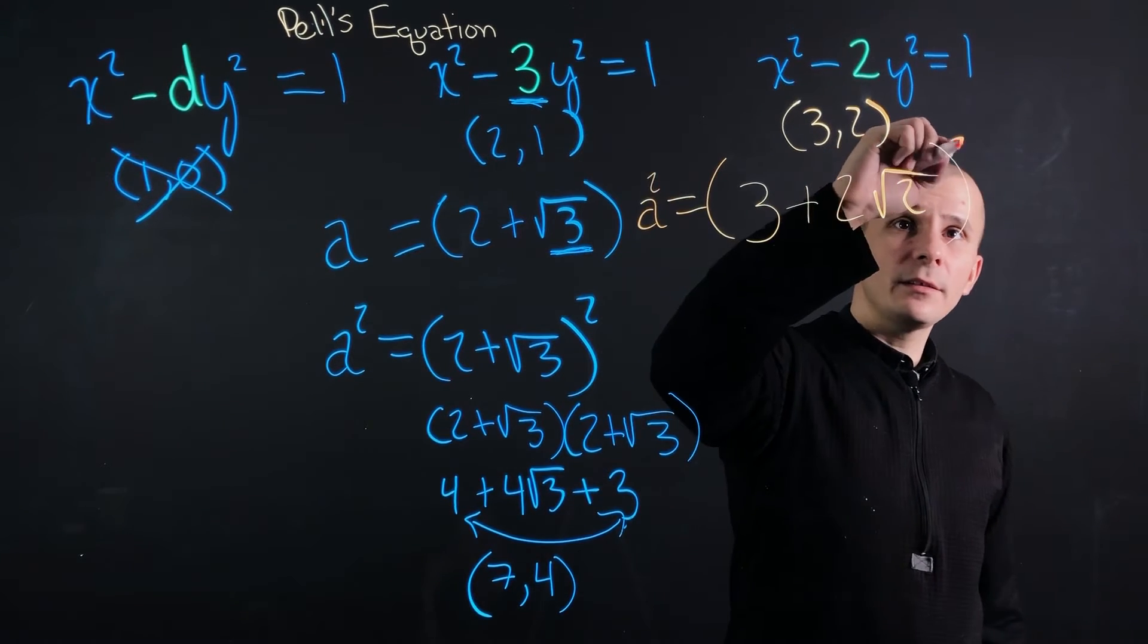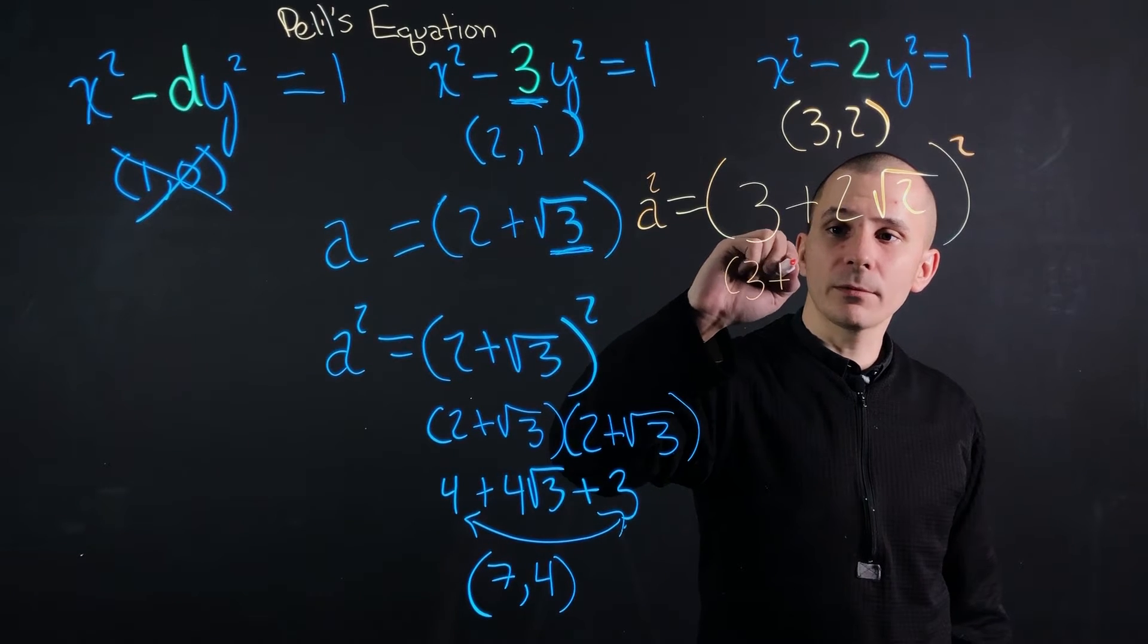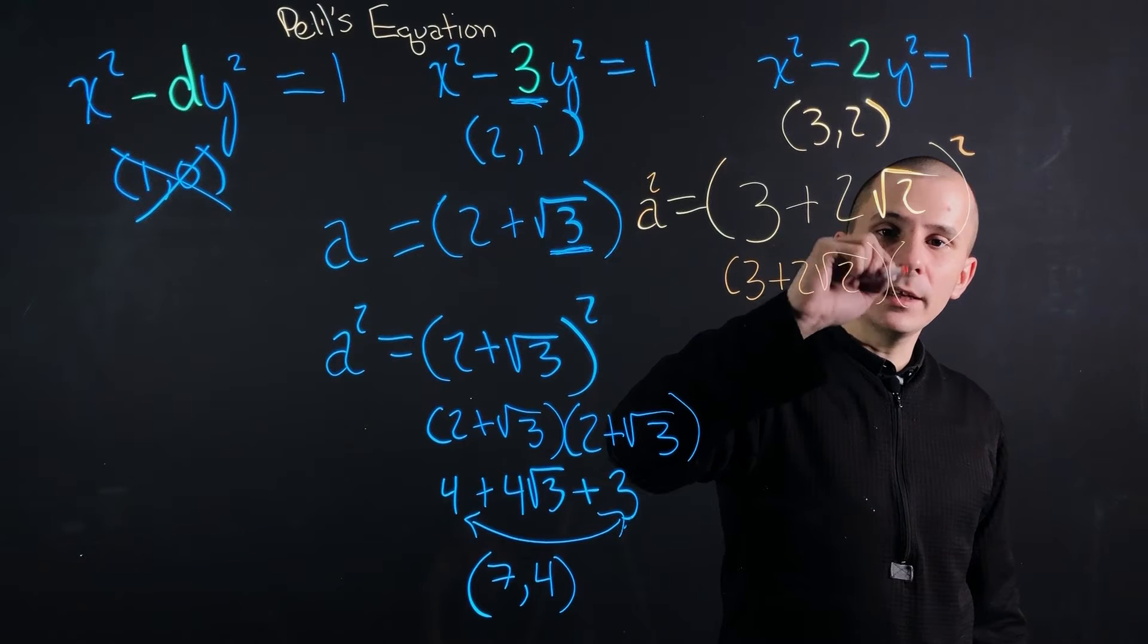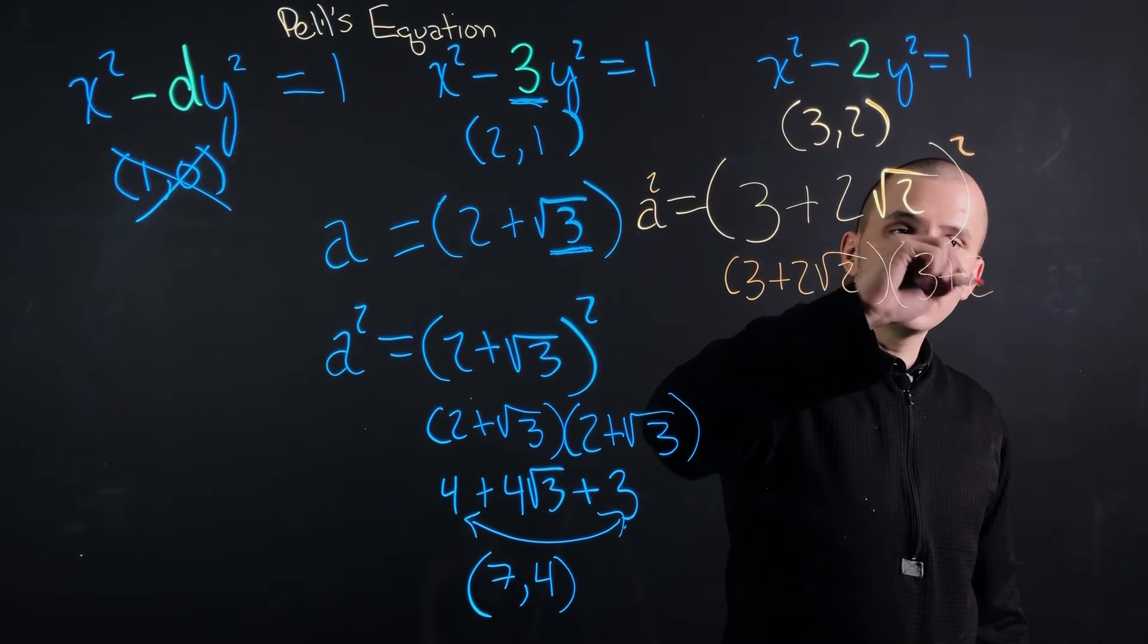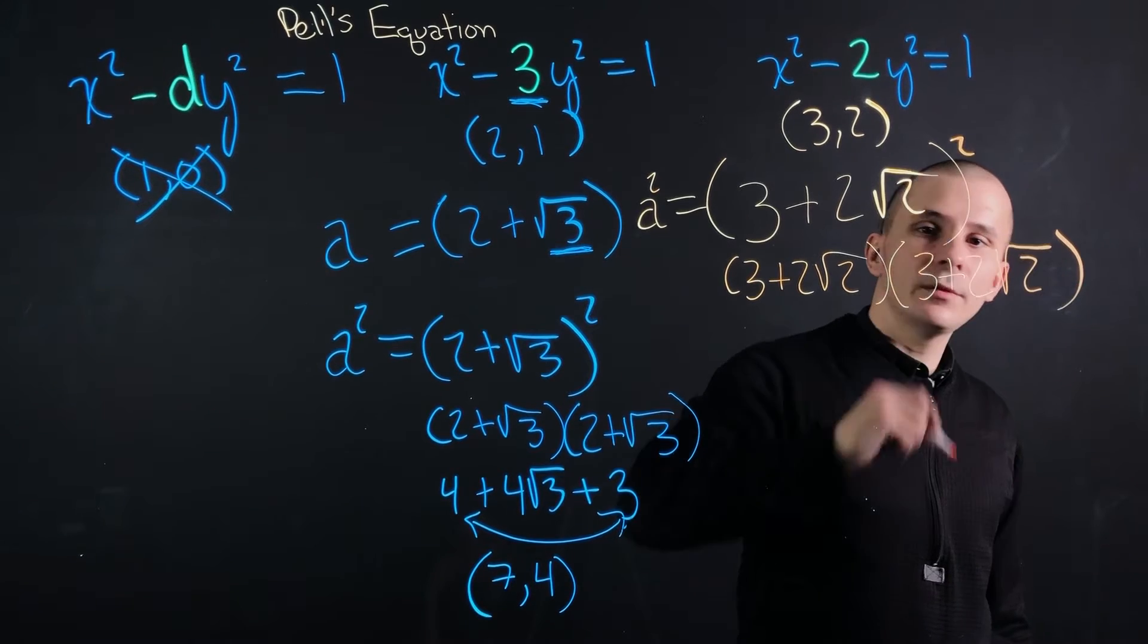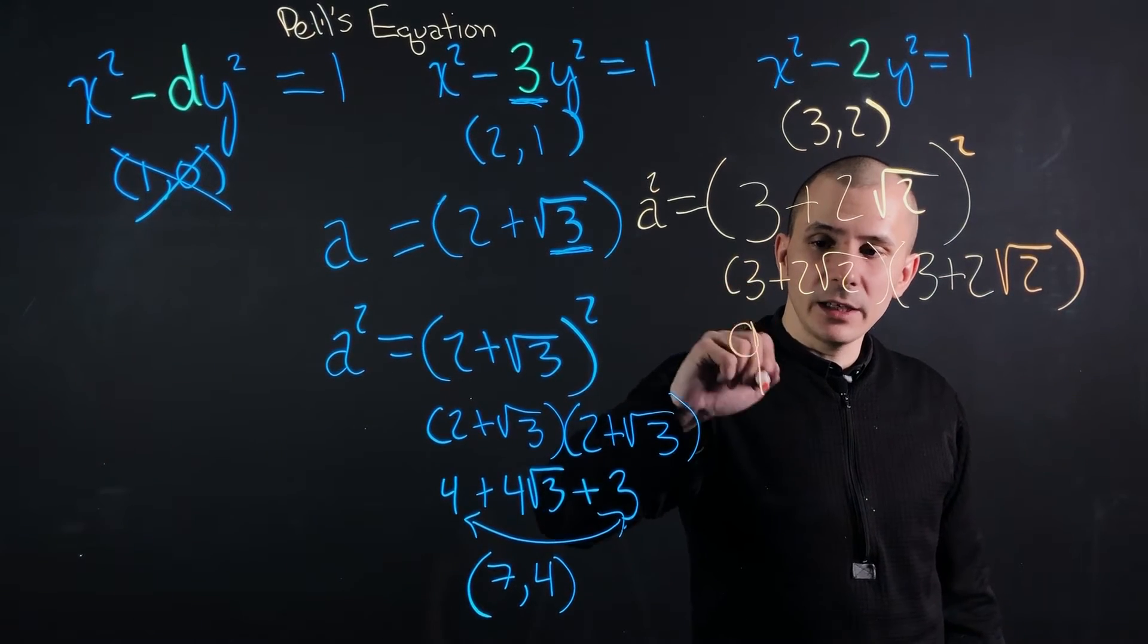And if we square that, what we're going to have to do is foil again just to walk through it. So (3 + 2√2) and then again (3 + 2√2). All right. So foil, first. So that's going to be 9.